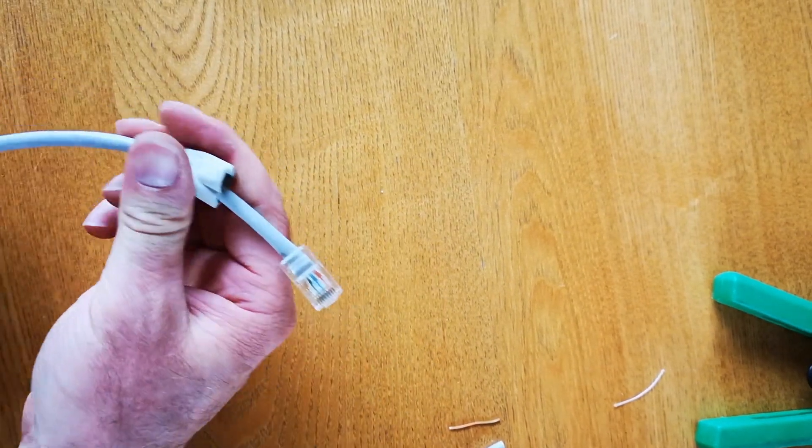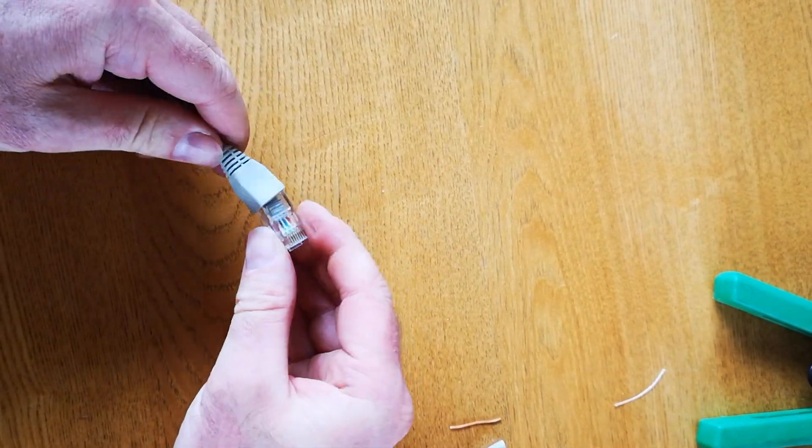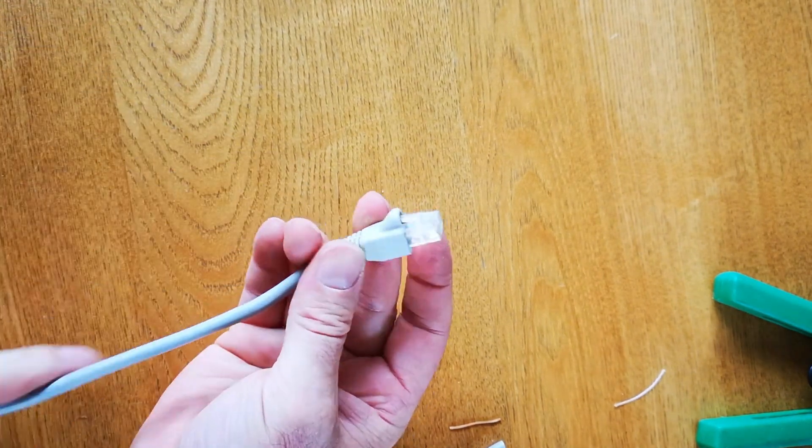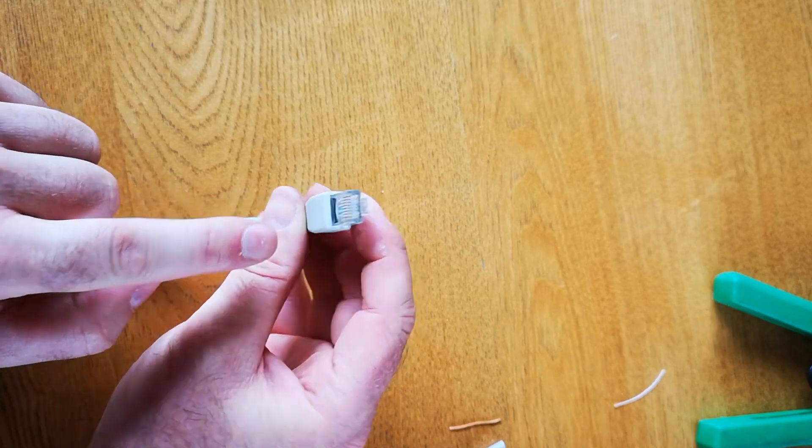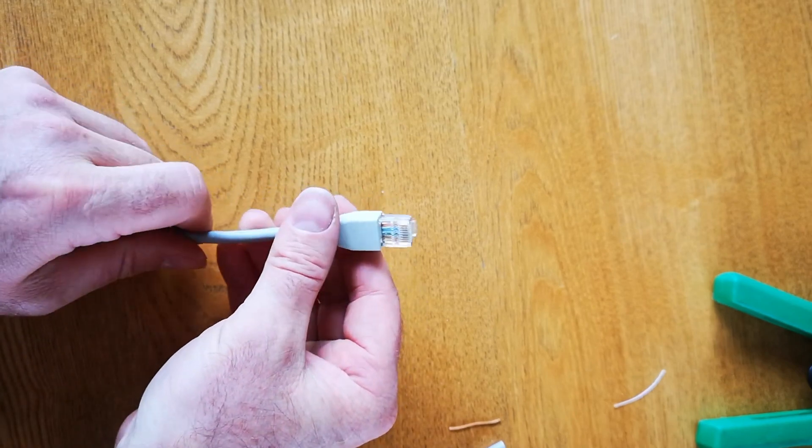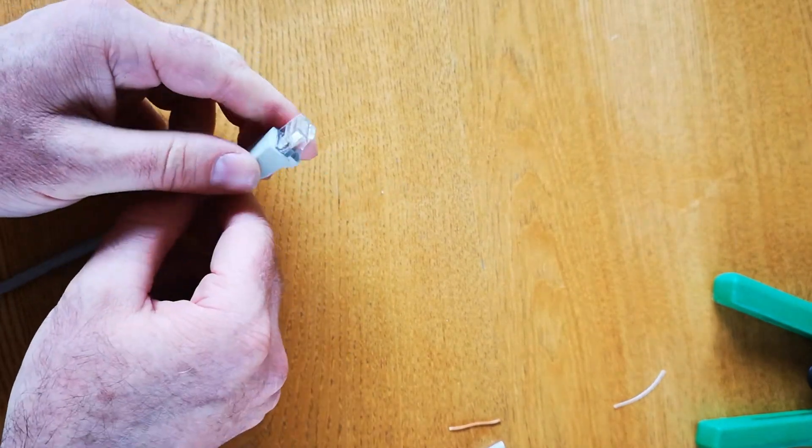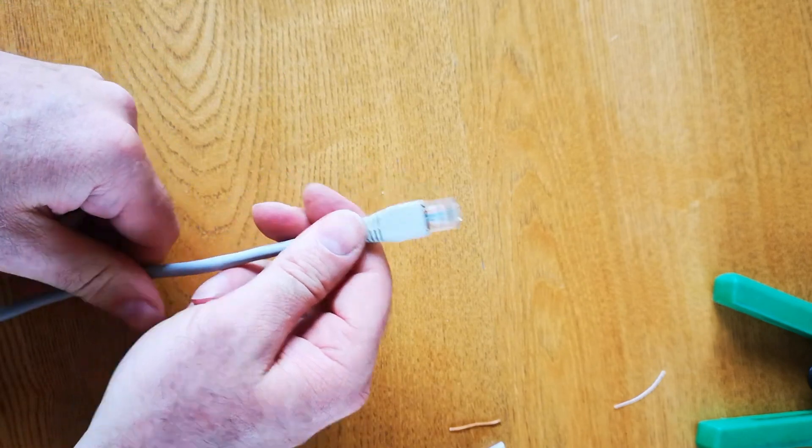Bring up the strain relief that you put on before and then just wiggle it over the connector. Like that. And that is now ready and you can see all the colours in the right order touching the end and it's crimped on well. So that's ready for your CT clamp or to go into the BMS port RS485 or CT port of your inverter.